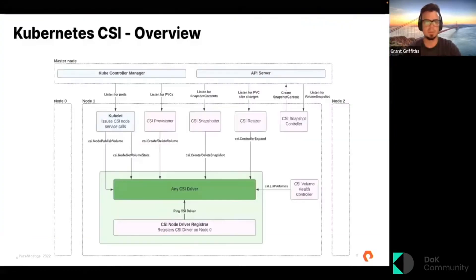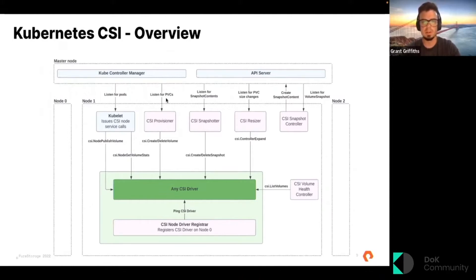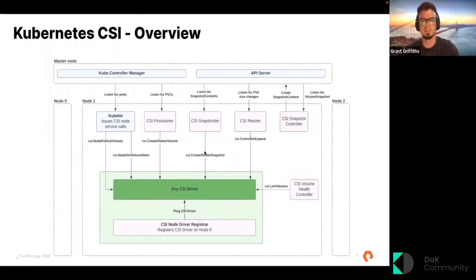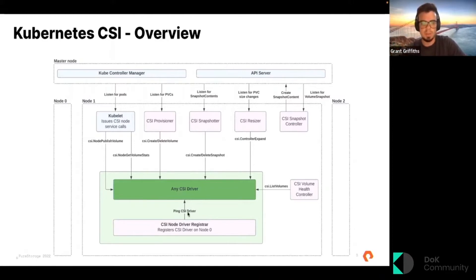Next, let's talk about Kubernetes CSI volume snapshots. This diagram goes over what all the different components are in a deployment. The main ones we'll talk about are the CSI snapshotter and the CSI snapshot controller, as well as the CSI provisioner. All of these sidecars listen for changes to objects — the provisioner listens on provisioner changes, the snapshotter listens on snapshot contents and does create/delete snapshot, and the snapshot controller handles volume snapshot creation. These sidecars can talk with any CSI driver.